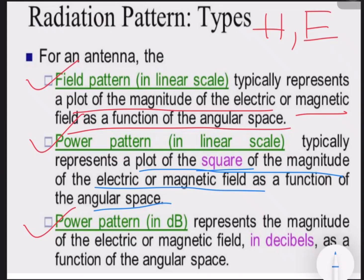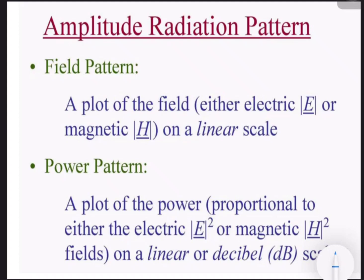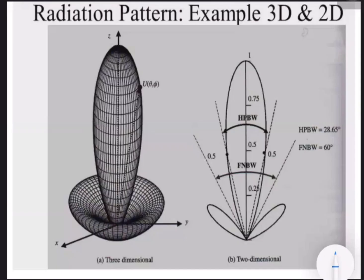The radiation pattern can be explained as arriving in field pattern, power pattern in linear scale, or power pattern in dB. When we plot the radiation pattern in terms of amplitude, we have the field pattern — a plot of the field in electric or magnetic field on a linear scale. Power pattern can be expressed in linear scale or dB, that is E-squared or H-squared. This is the radiation pattern in three-dimensional and two-dimensional view. When you conduct the experiment in relevance to antenna, you will be plotting this radiation pattern.